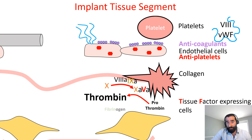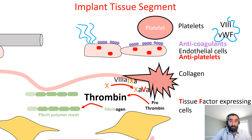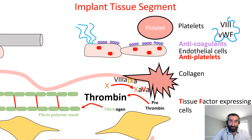This thrombin then accelerates the polymerization of fibrin, which is a mesh network that is then cross-linked at the site.